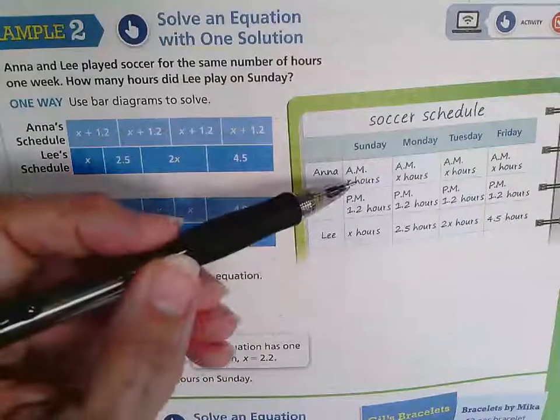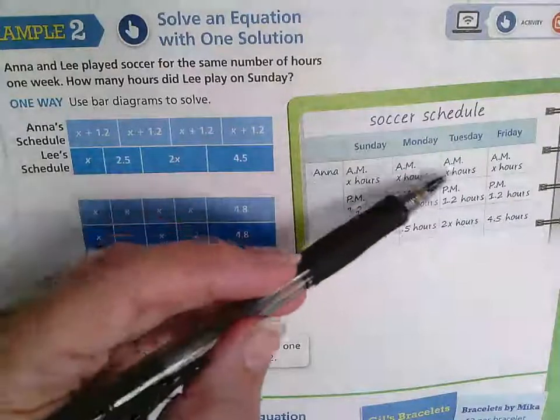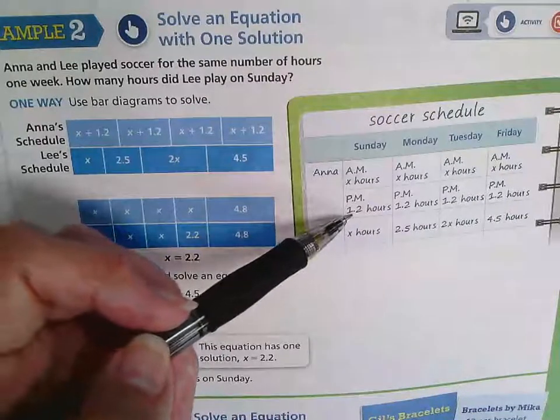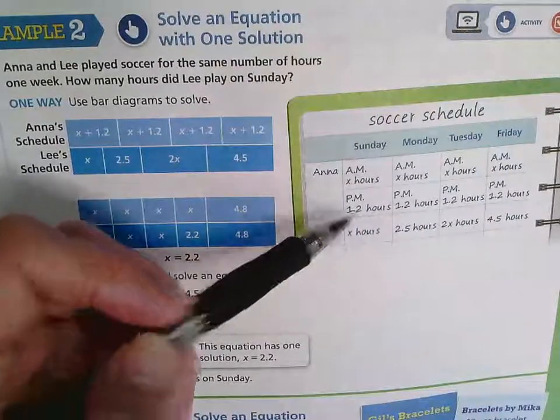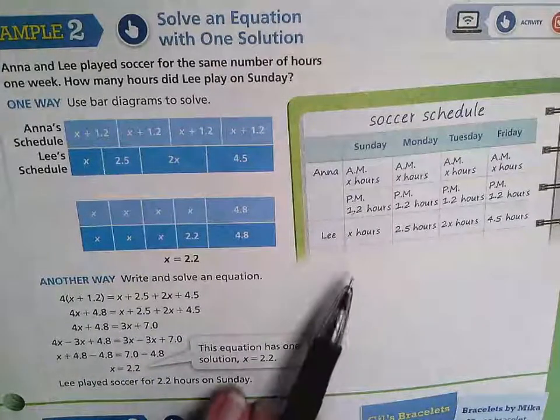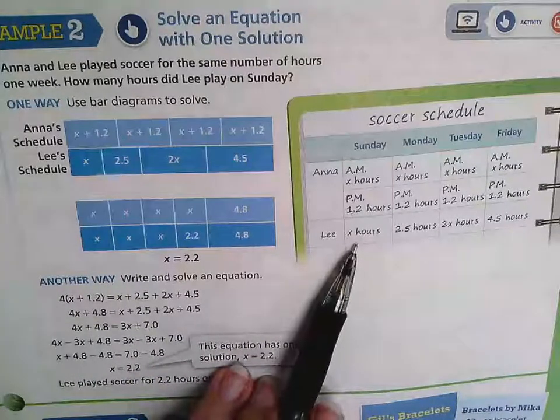Notice that her morning hours are all the same because they're all X. And her afternoon hours, we actually get the number of hours that she's playing. Whereas with Lee, we're getting a variety of information.